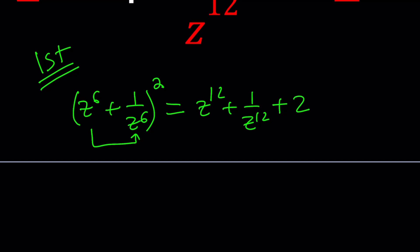So now we already know that this is equal to 2. It's given. So this is going to be 4. So something squared equals 4. We have two results. From here z to the 6 plus 1 over z to the 6 equals plus minus 2. Let's keep that.